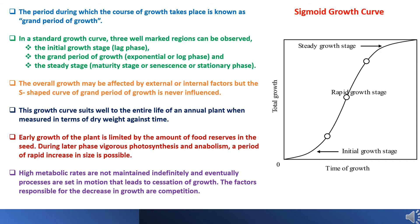Now we will focus on the sigmoid growth curve in detail. The period during which the course of growth takes place is known as the grand period of growth. In a standard growth curve, there are three well-marked regions: the initial growth known as the lag phase, the grand period of growth which is the exponential or log phase, and the steady stage which is the maturity stage or senescence or stationary phase. The overall growth may be affected by external or internal factors, but the S-shaped curve of the grand period of growth is never influenced. This growth curve suits well to the entire life of an annual plant when measured in terms of dry weight against time.